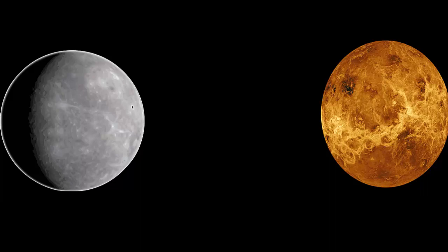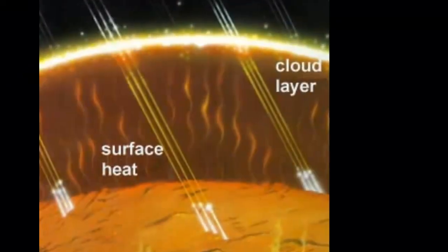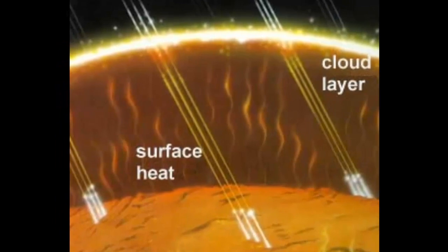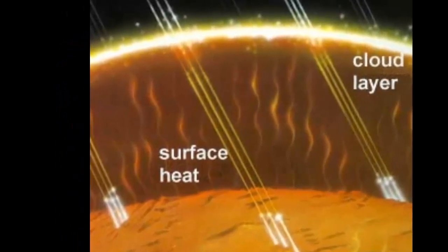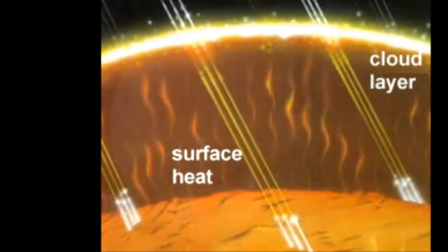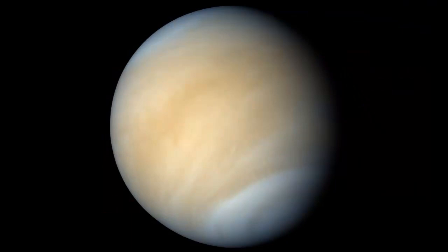Thanks to a very thick atmosphere. Most of this heat cannot escape back into space and is blocked by thick clouds of sulfuric acid that completely cover the planet.